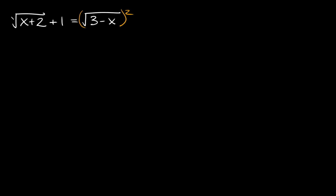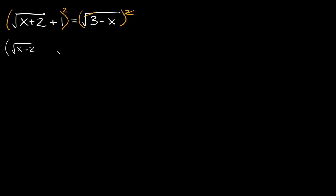Whatever we do to one side of the equation we have to do to the other, so we have to square this whole side also. On this side the square root and the squared exponent cancel each other out so we're just left with what's inside the radical which is 3 minus x, and that's equal to this whole thing squared. So we're going to multiply out the square root of x plus 2 plus 1, times the square root of x plus 2 plus 1, equal to 3 minus x.